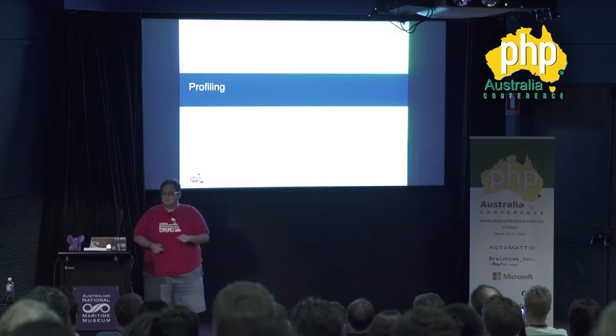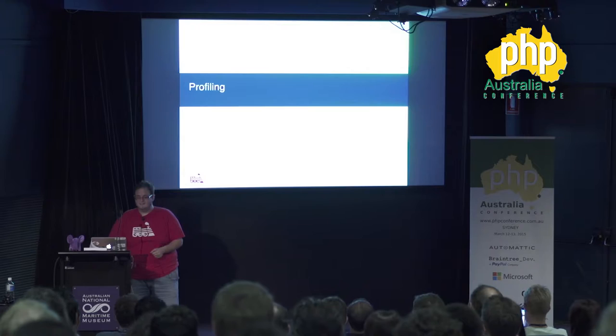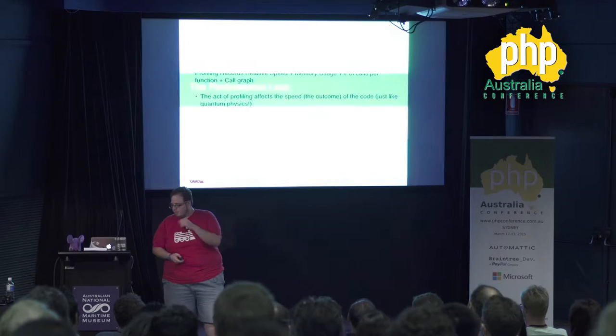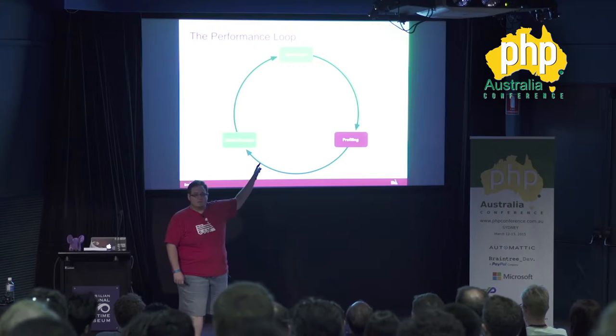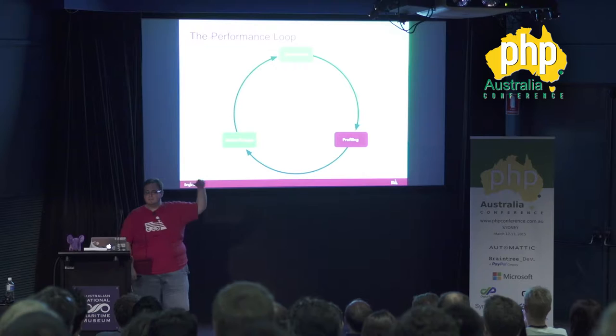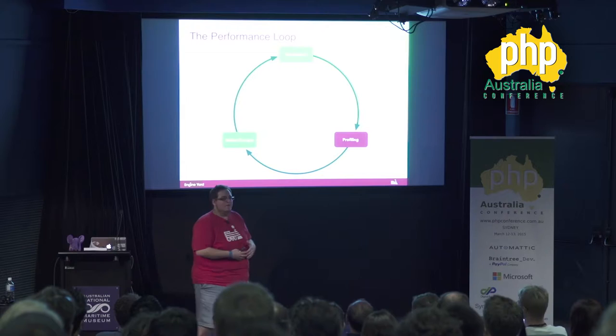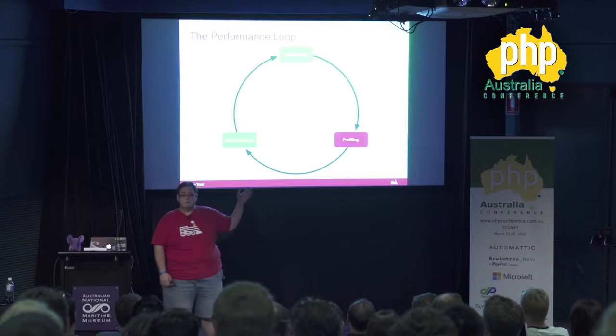It's kind of like in nuclear physics — when you observe it, you mess it up. Benchmarking will test the actual speed, so this is what your users are actually going to see. I like to do what's called the performance loop: you run a benchmark, then you profile it, you make some changes, and then you benchmark again. You benchmark to see your actual performance, run profiling to see why things might be slow, make changes, and then benchmark again to see the end result.